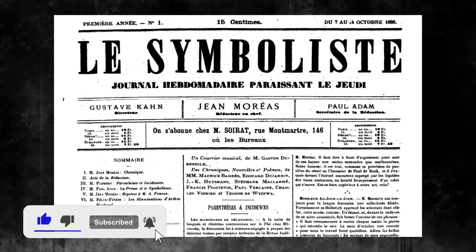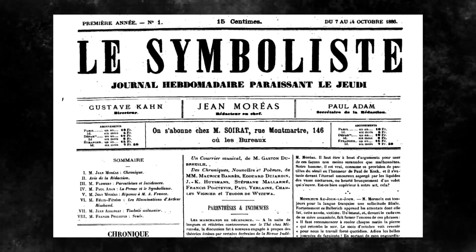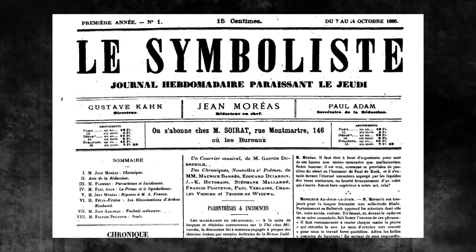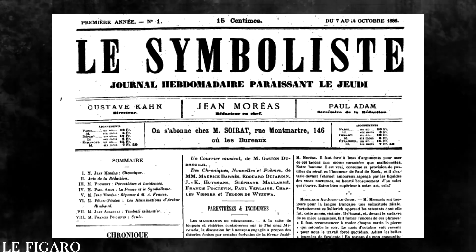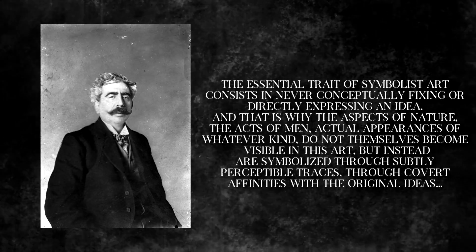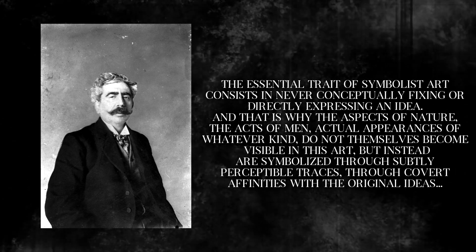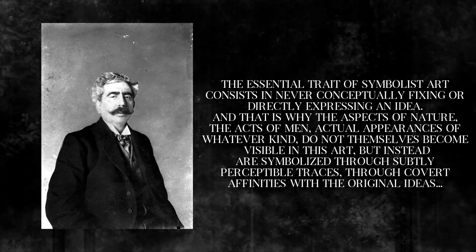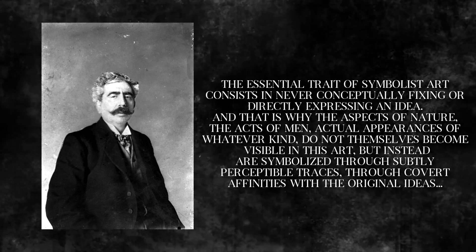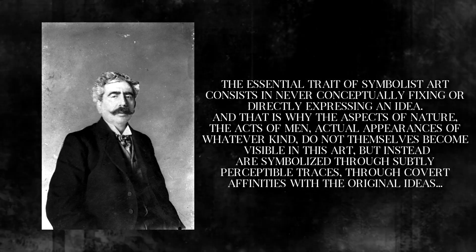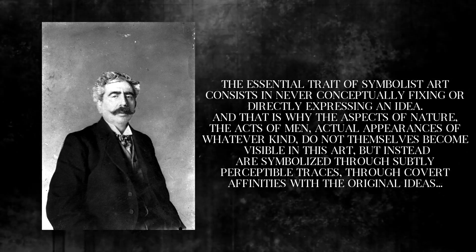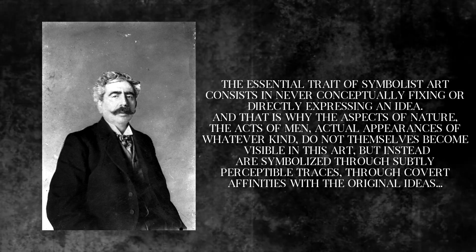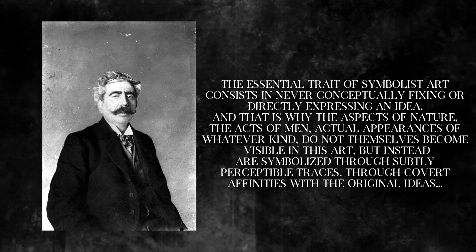A fundamental impulse came from France in the shape of a symbolist manifesto by the writer Jean Moreas, published in 1886 in the Parisian Le Figaro. There he explained: the essential trait of symbolist art consists in never conceptually fixing or directly expressing an idea, and that is why the aspects of nature, the acts of men, actual appearances of whatever kind, do not themselves become visible in this art, but instead are symbolized through subtly perceptible traces, through covert affinities with the original ideas.